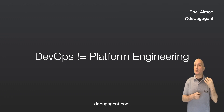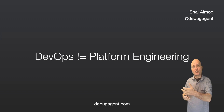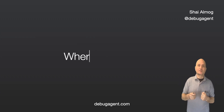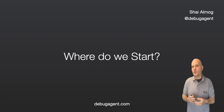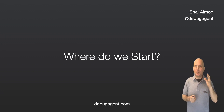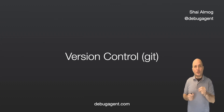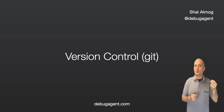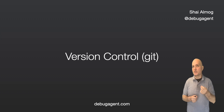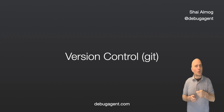DevOps helps teams deliver software faster, while platform engineering provides the infrastructure and tools needed to support that process. When learning DevOps, it is important to have a solid understanding of the tools and techniques commonly used in the field. Here are some of the most important tools and techniques to learn. Understanding how to use version control systems such as Git is a key component of DevOps. Version control systems allow teams to track changes to their code, collaborate on projects, and roll back changes if necessary. I assume you know Git and won't cover its basic semantics, but in this video we will discuss some of the important aspects of version control.